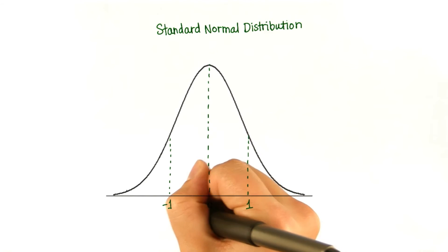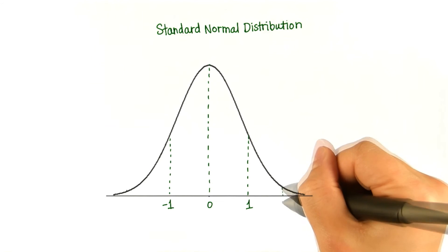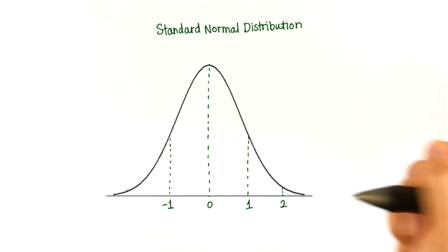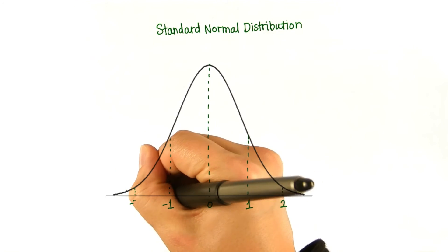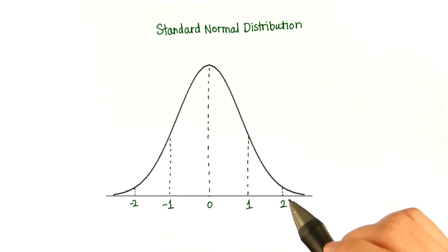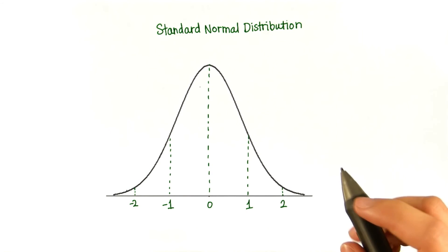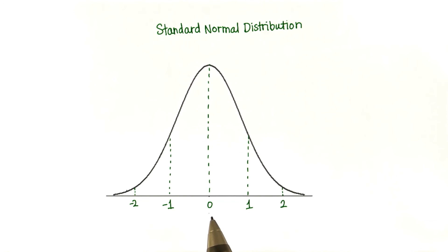So here the z score is going to be negative 1, and 2 standard deviations away, and negative 2. So now every value in the data set is written in terms of the number of standard deviations it is from the mean.